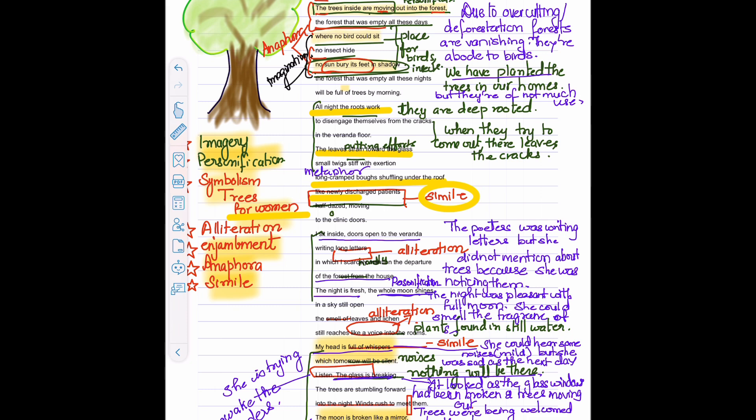Long cramped bones is metaphor. Thus the poem has many poetic devices, written in free verse by Adrienne Rich. So that is a line by line explanation of the poem The Trees.